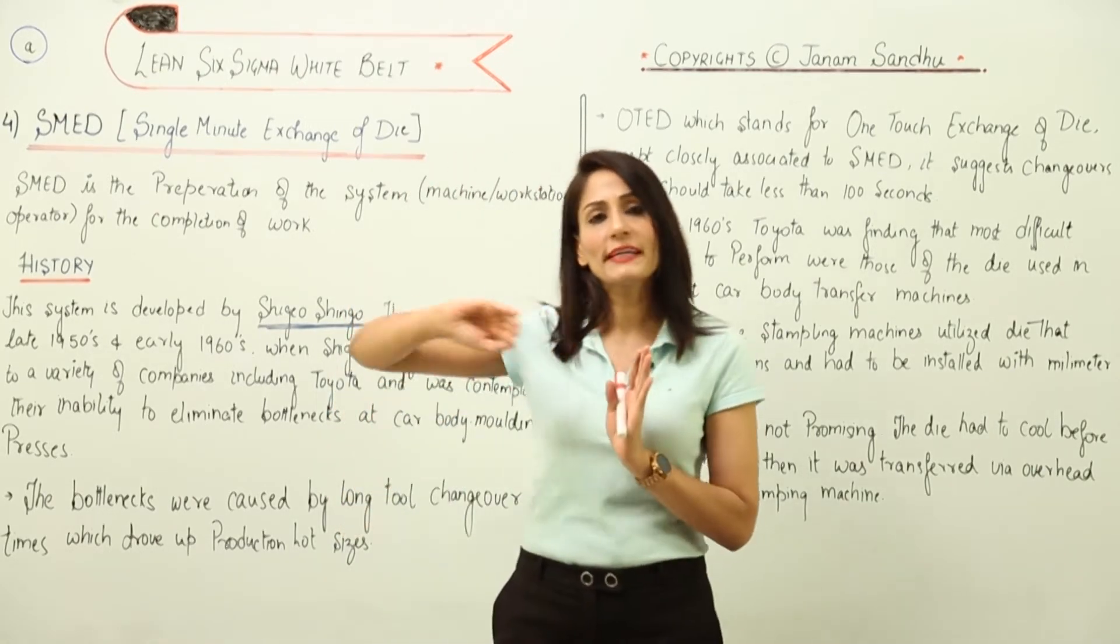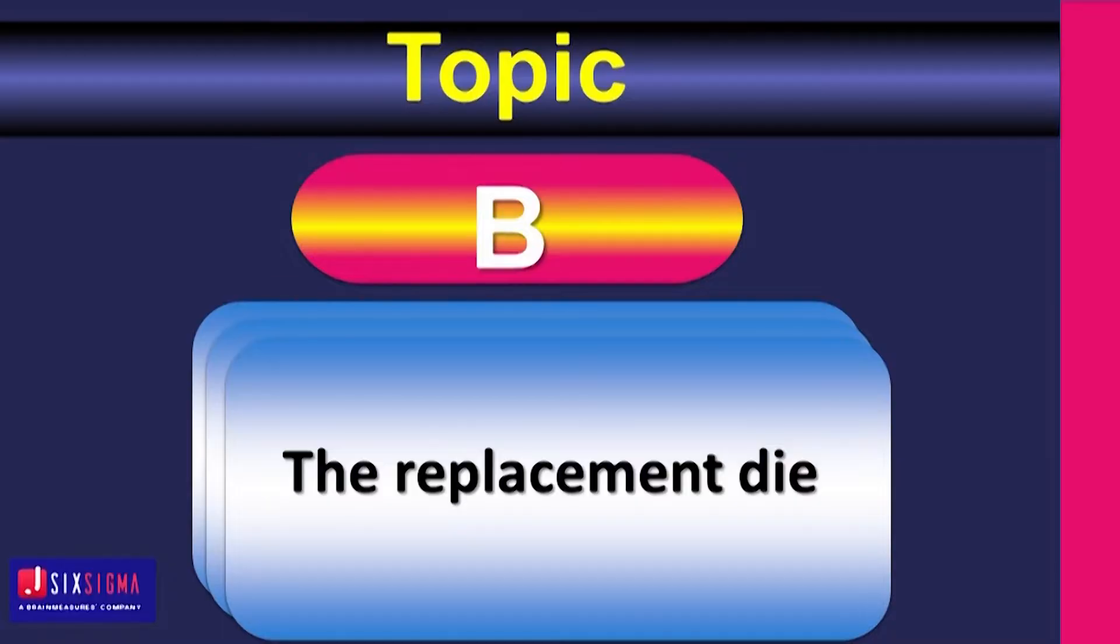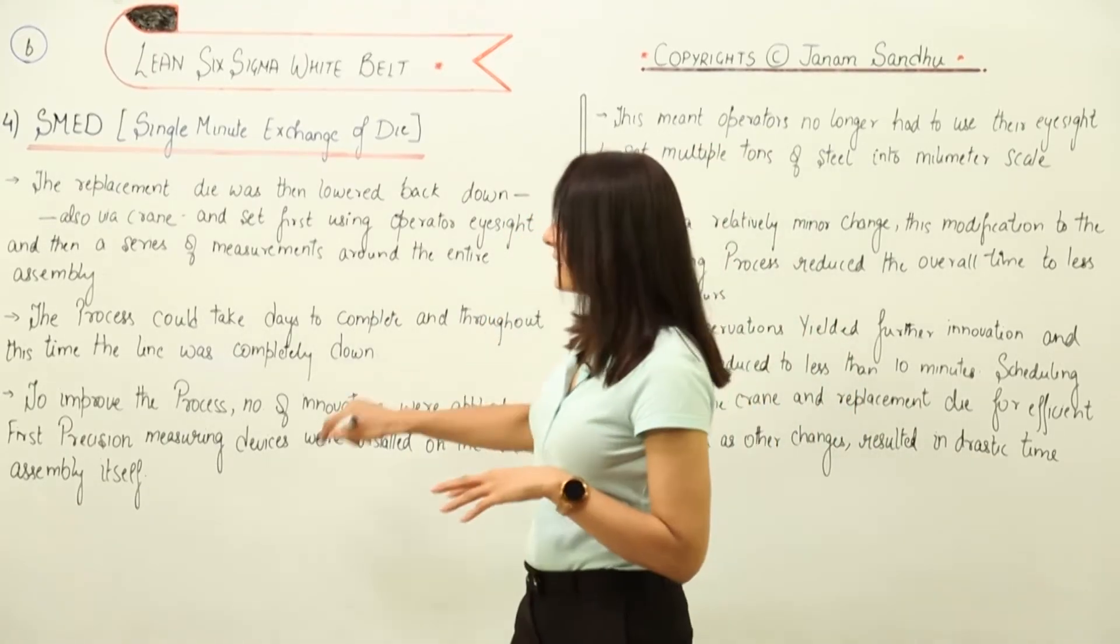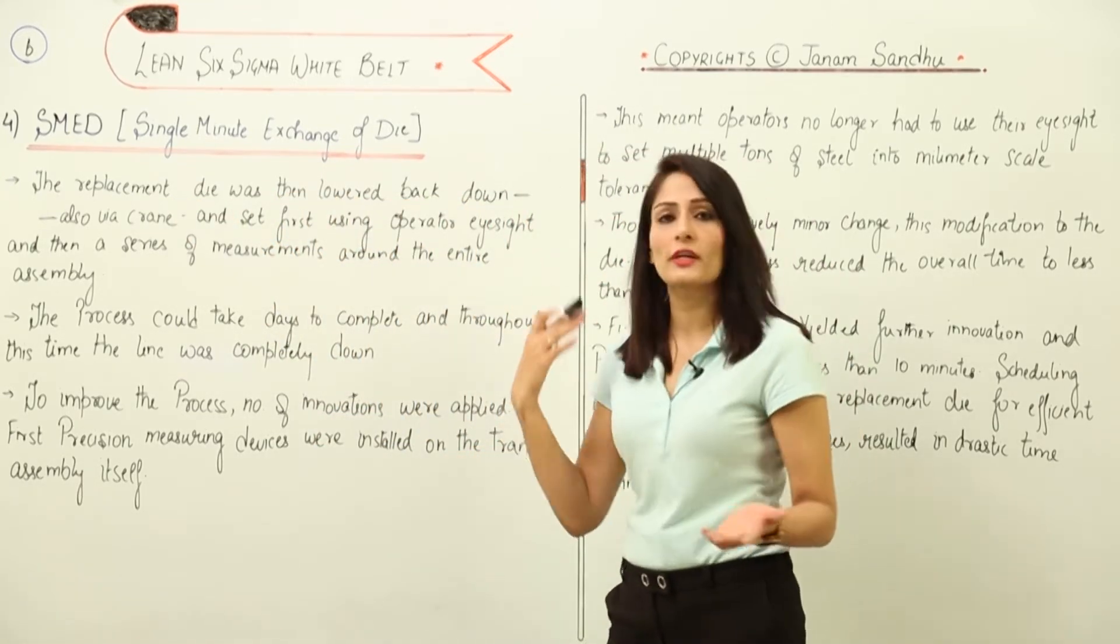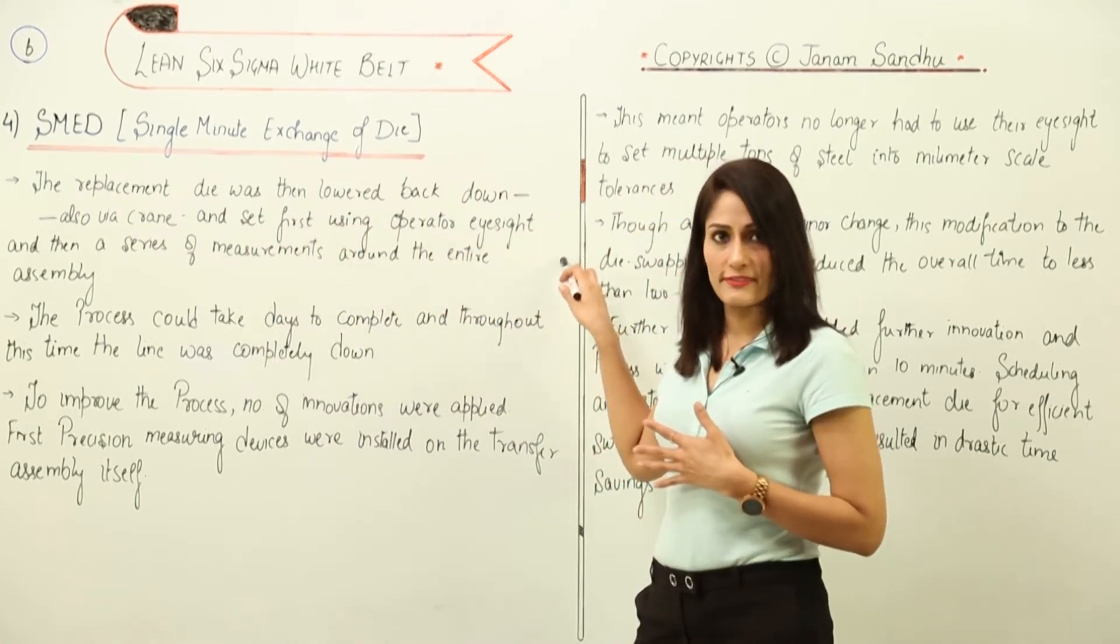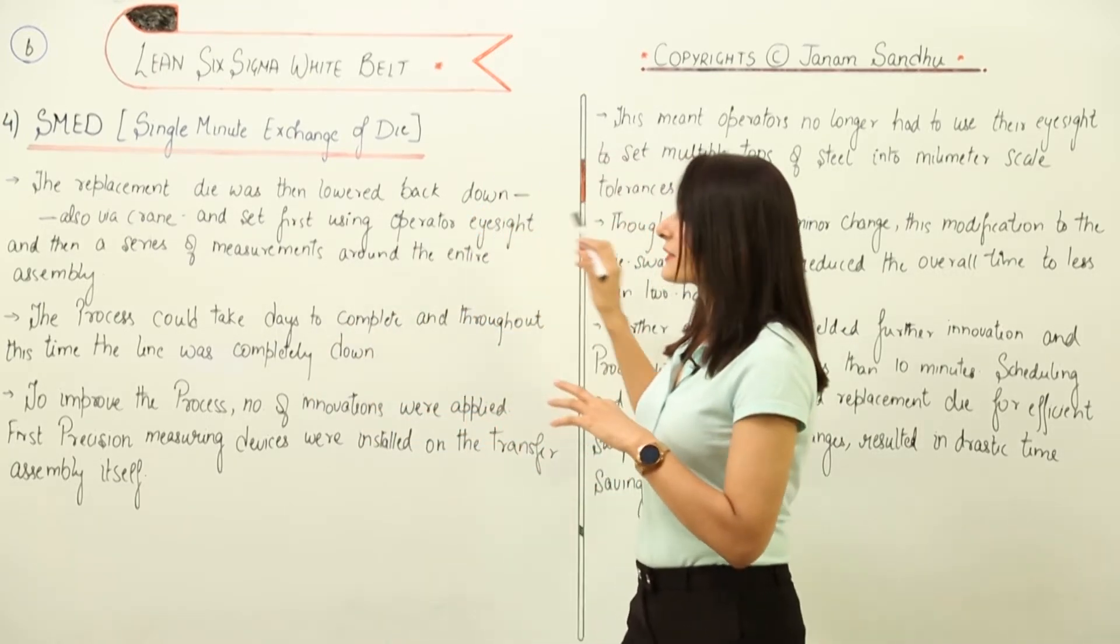When the die cooled down and they removed it, the replacement die was then lowered back down again using a crane and set first using operator eyesight because they had to put it very precisely.